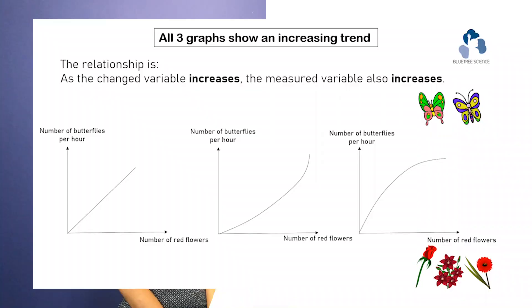Shall we learn more about that? When you look at the graph, the first thing you will notice is there are two titles, one on each side. So there are two axes usually in the graph. The axis at the bottom is usually the change variable, and the axis at the side is usually the measured variable.